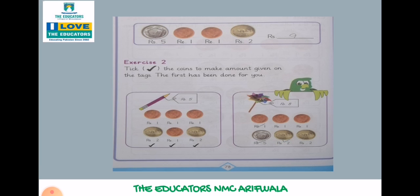Now we will solve book page number 78. Open your book page number 78. 5 plus 1 plus 1, 7 plus 2 is 8, 9. Exercise number 2 — you tick the coins to make the amount given on the tag. The first has been done for you, like this.